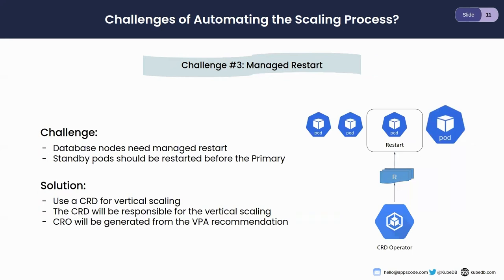The next challenge is to manage restart. Databases need managed restarts during vertical scaling. For example, in databases with a primary-standby architecture, it generally requires restarting all the standby nodes first. When all standby nodes are restarted, the primary steps down and one of the standby nodes becomes the new primary. Finally, the previous primary node is restarted. The order needs to be maintained, and we may also need to check whether all pods rejoin the cluster.